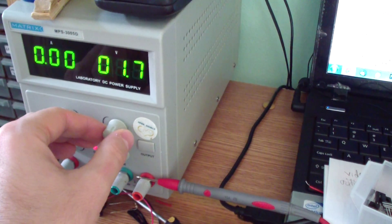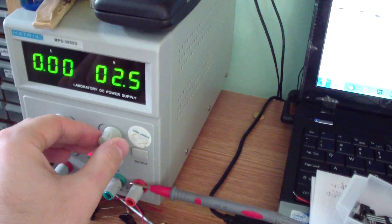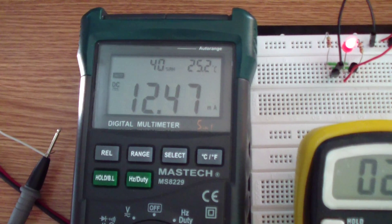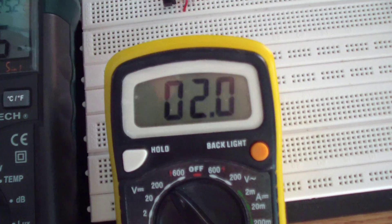Now I have 2.5 volts, the LED shines, and the current consumption is around 12 milliamps. The voltage on the LED is 2 volts.